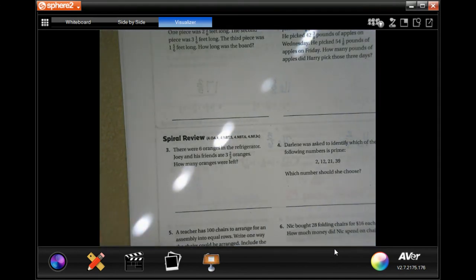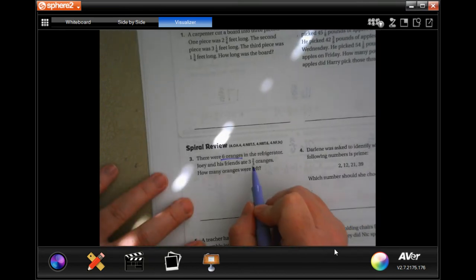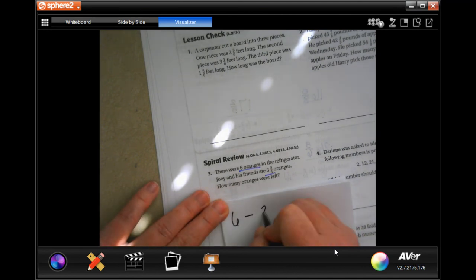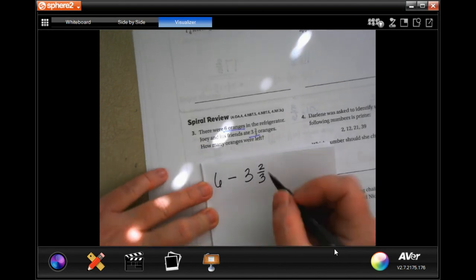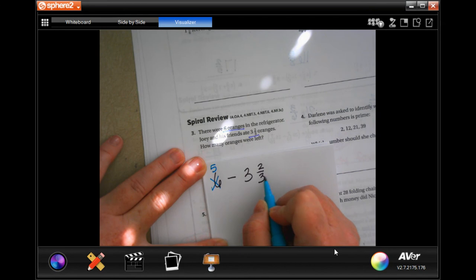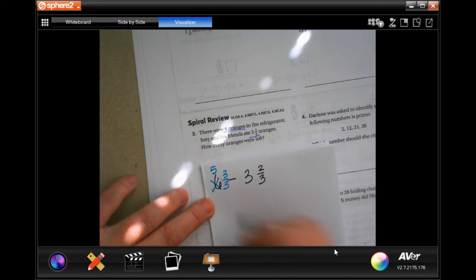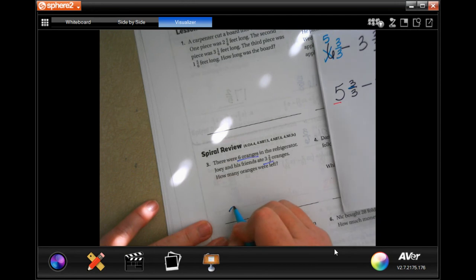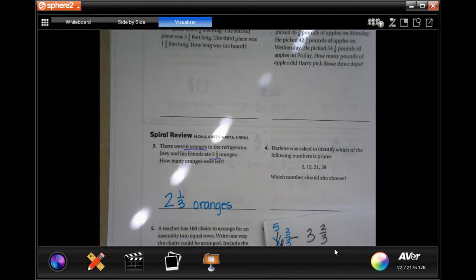There were six oranges in the refrigerator. Joey and his friends ate three and two-thirds oranges. So we have six minus three and two-thirds. I don't know who eats two-thirds of an orange, but okay. You'll notice that six doesn't have a fraction, so I'm going to borrow one, making it five. I'm going to put a three over three because that's my denominator. Now I have five and three thirds minus three and two thirds. Five minus three is two, three minus two is one, and I keep my denominator. Two and one third oranges.